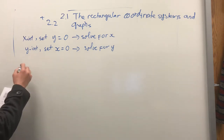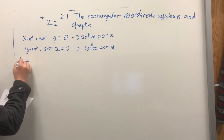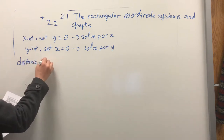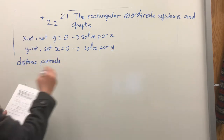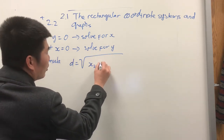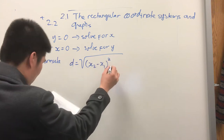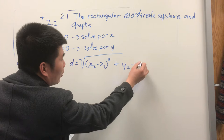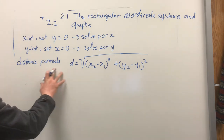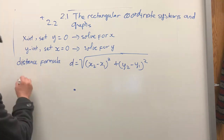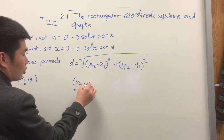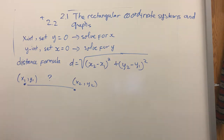Distance formula. You can use the formula: d equals the square root of (x2 minus x1) squared plus (y2 minus y1) squared. The distance formula means you have two points — x1, y1 and x2, y2 — and you want to find out what is the distance between these two points.